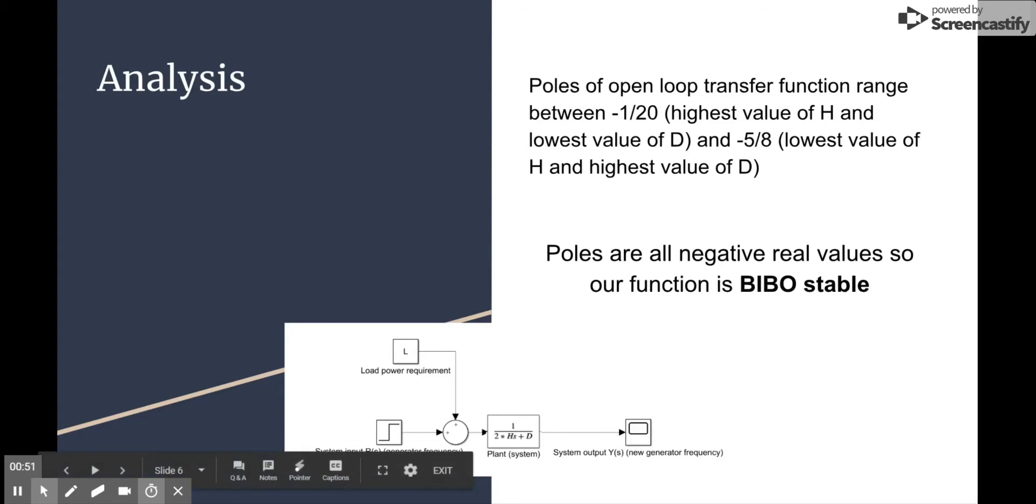On the bottom here, you can see our open loop diagram, which demonstrates how the system takes inputs in terms of the load requirement and current generator frequency, and how it's going to output the new generator frequency. This system has no feedback or controller.